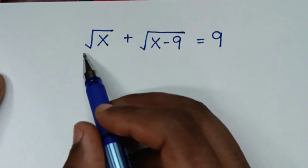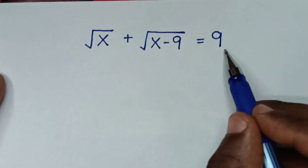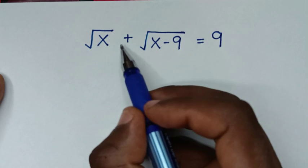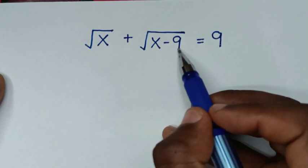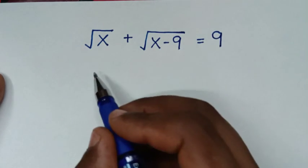Hello, you are welcome to solve this math problem, which is: square root of x plus square root of x minus 9 is equal to 9.